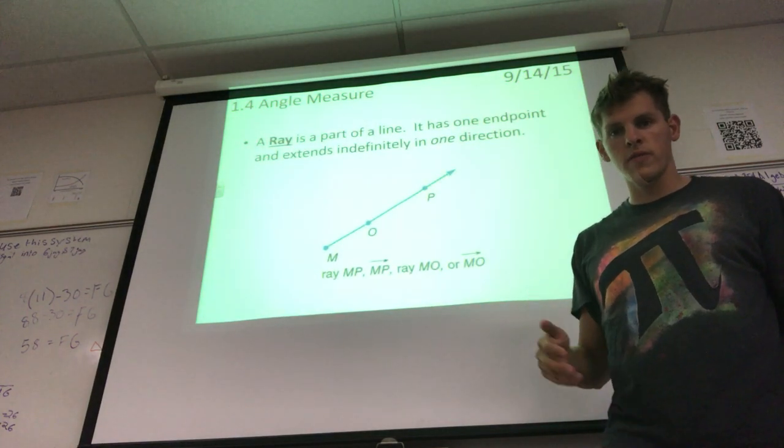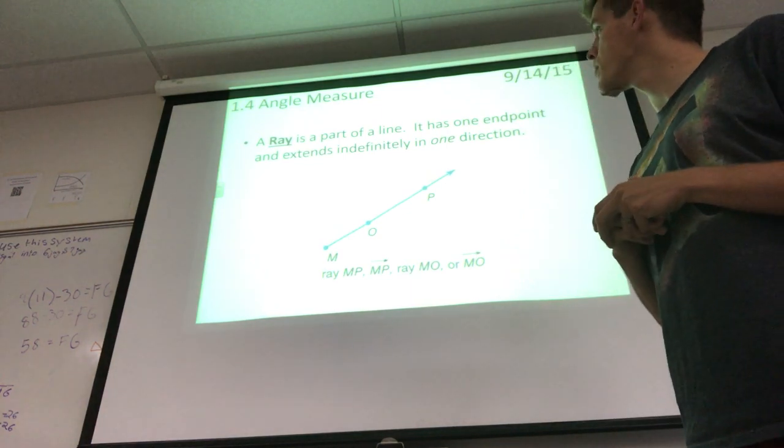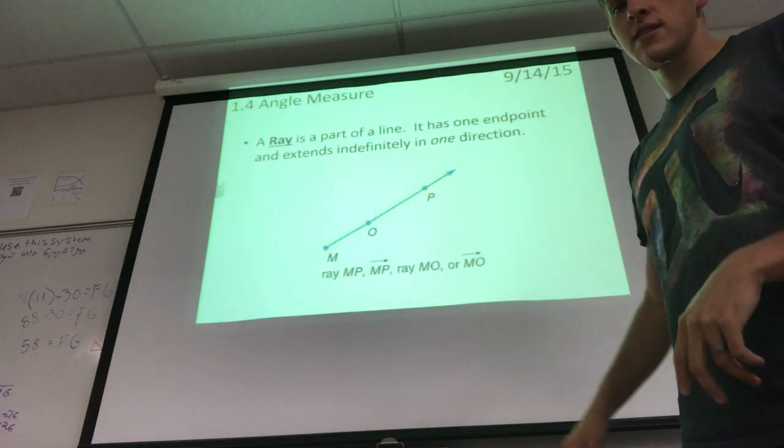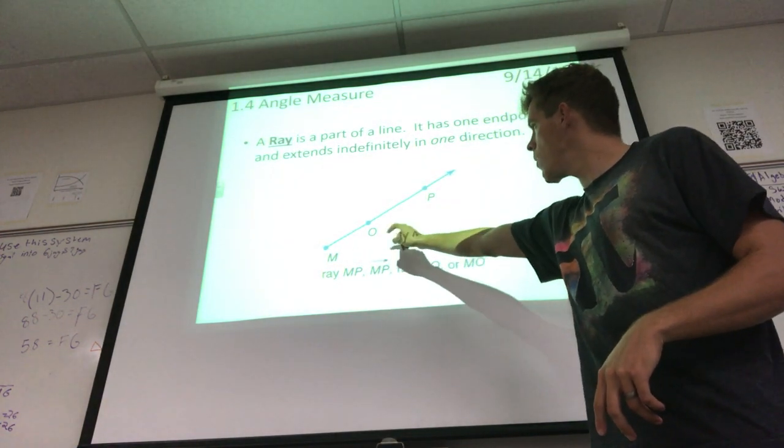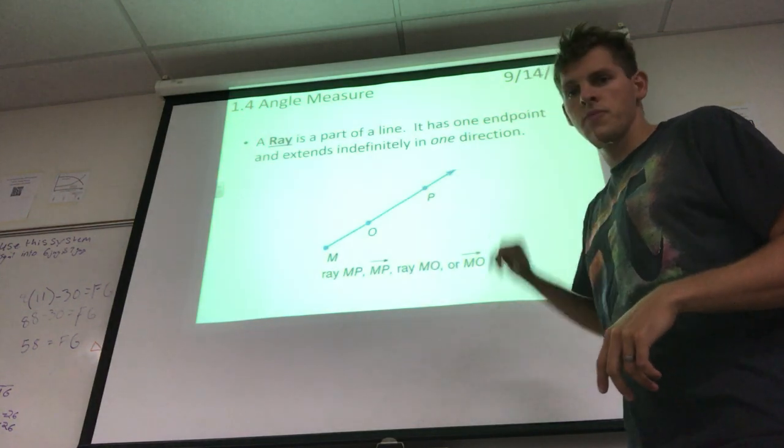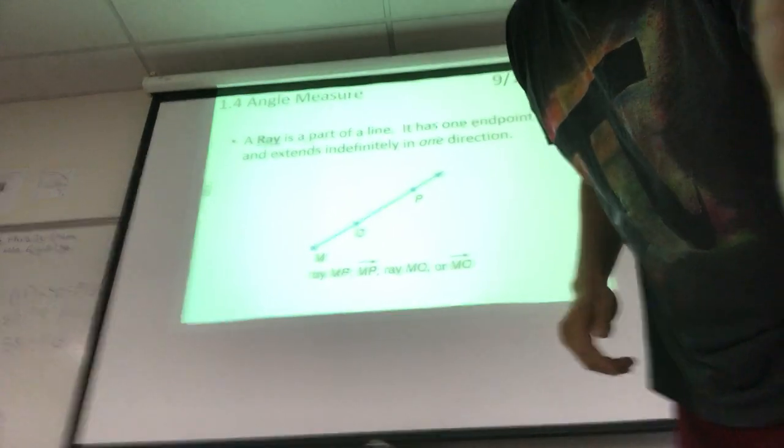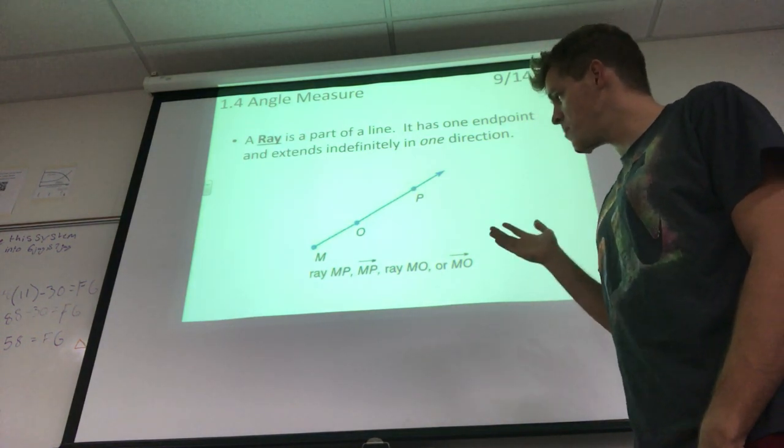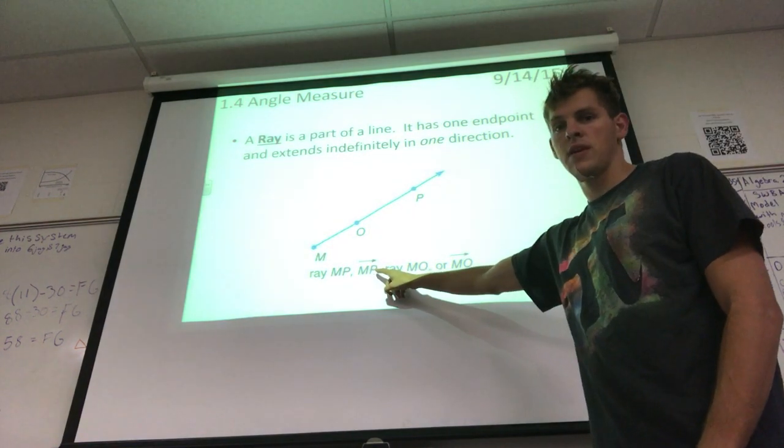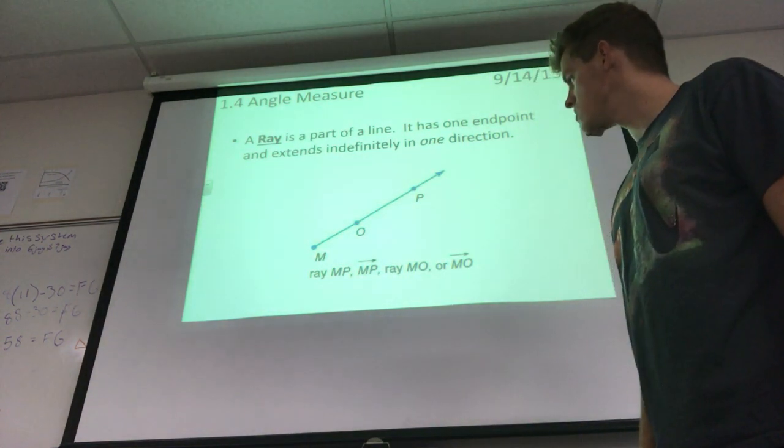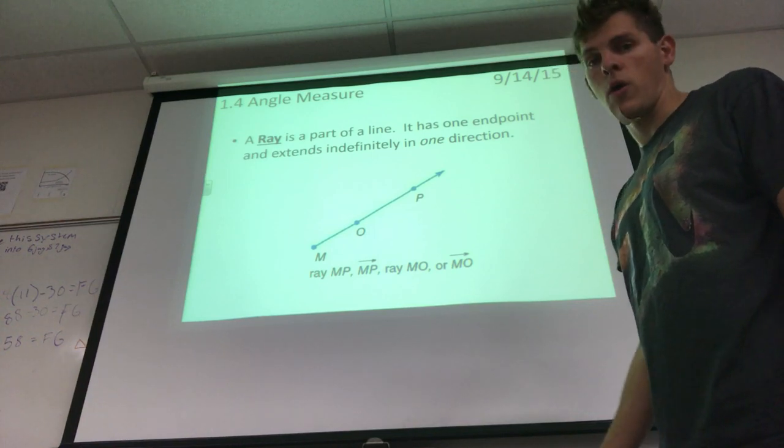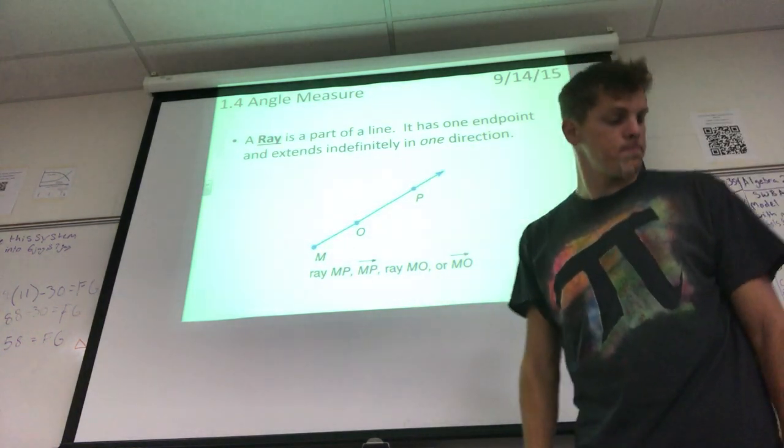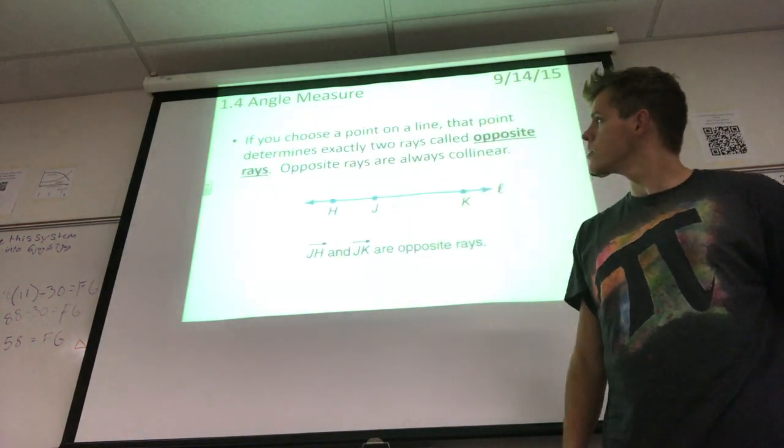One of the vocab words we've talked about before is ray. A ray is a part of a line, it has one end point and extends indefinitely in one direction. In this case we see MO and OP. We could refer to this as ray MP and write it as MP with an arrow.